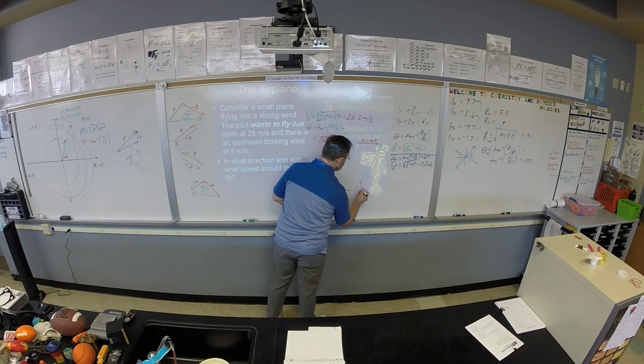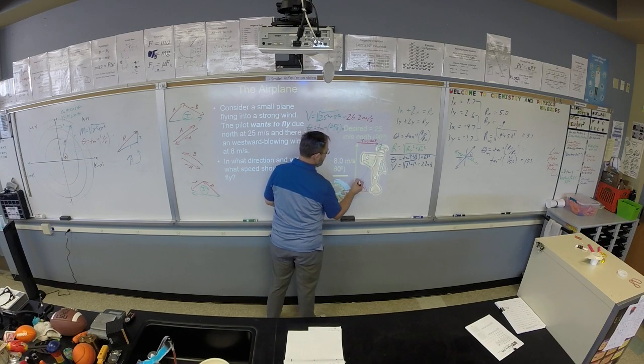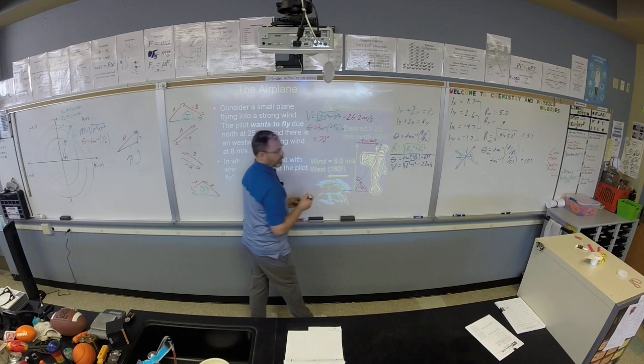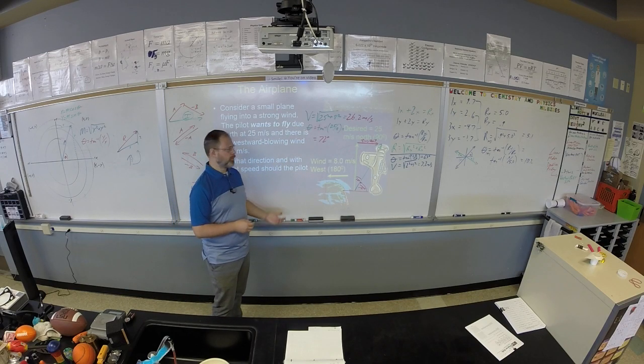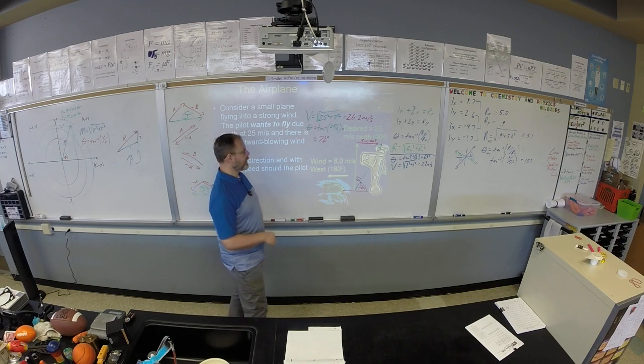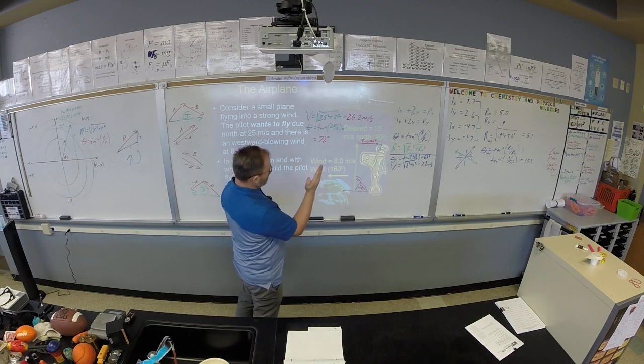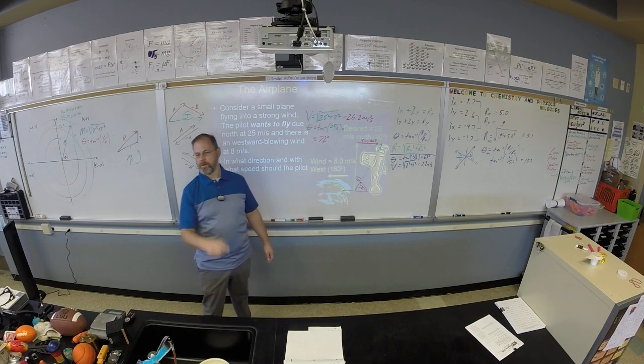So you can say 72 degrees from the origin, or you can say 18 degrees from north. Does that make sense? So are we happy with this? You can say I'm going to go 18 degrees west of north, or I'll do 72 degrees overall. Sir?